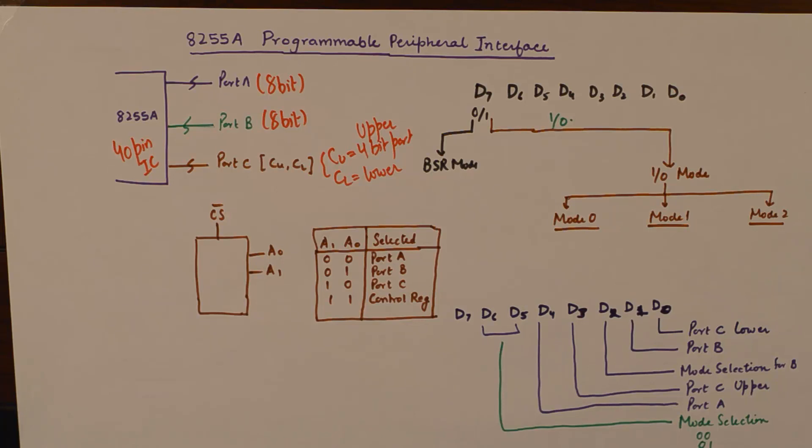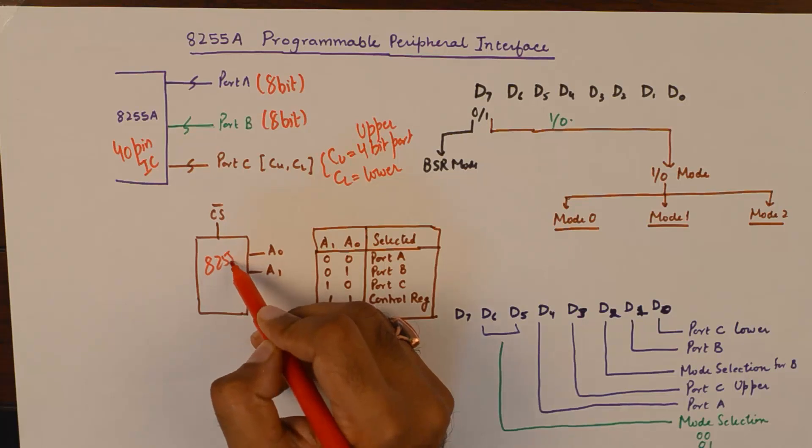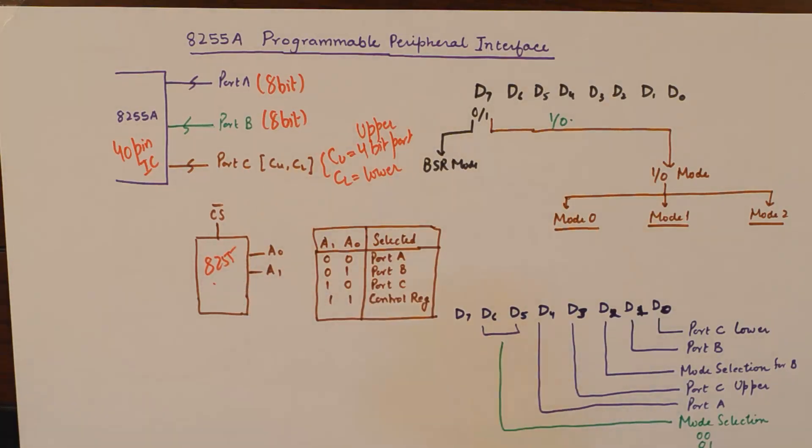Now this IC being a 40-pin IC, if you study the pin out diagram of this 40-pin IC, you will find three pins by the name of A0, A1, and CS bar. By the way, I will put an annotation in the form of a JPEG file on top of this video that will show you the pin out diagram. You can pause the video and note it if you wish to.